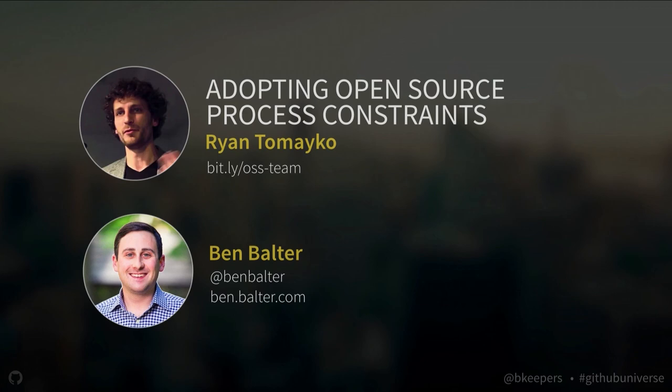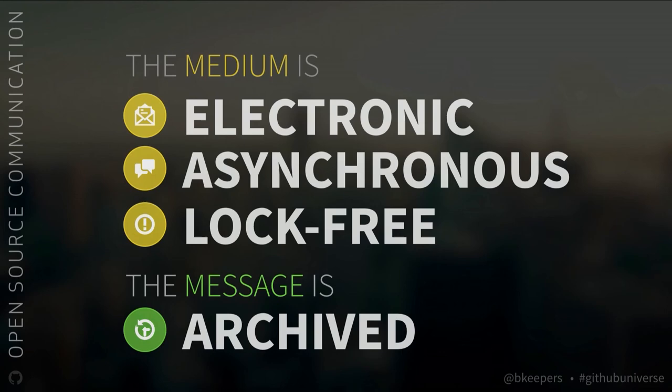These projects have to accept certain constraints in their workflow. Ryan Tomaka, the first engineer hired at GitHub, and Ben Balter have done a lot of work articulating these ideas. Open source projects use tools that enforce this communication structure. The medium is electronic, it's asynchronous, it's lock-free, and the result of those three things is that the message is archived.